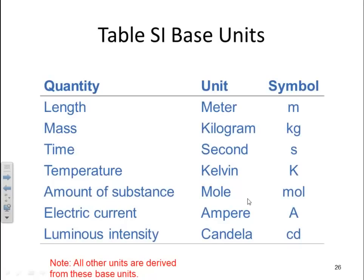Here are your SI base units. For length, it's the meter, symbol of a small m. Mass, it's the kilogram, symbol kg, small letters. Time is the second, small s. Temperature is the Kelvin, capital K. The amount of a substance is mole, M-O-L. Electric current is ampere, which is capital A. Luminous intensity is the candela, small c, small d. Note, all other units are derived units from these base units.